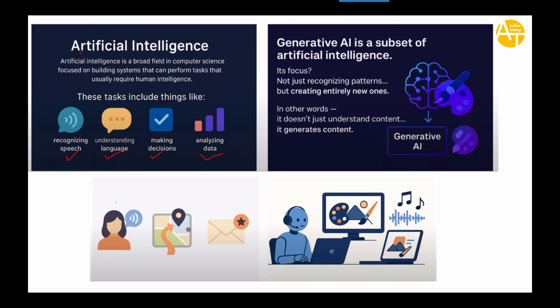In other words, Generative AI doesn't just understand content but can also generate content. As you can see in the examples: use cases of traditional AI include understanding voice commands when interacting with Siri or Google Assistant, finding the shortest route in Google Maps, or automatically categorizing emails as spam or not spam. On the other side, Generative AI can generate completely new images, compose music, or create amazing creative content through AI-based tools — specifically LLMs, which we will discuss in coming episodes.